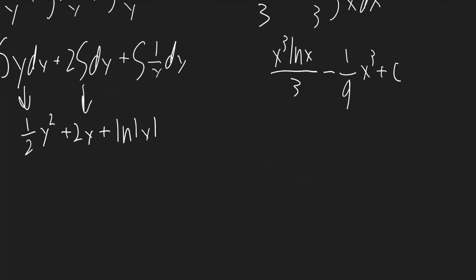Now I'll go ahead and include my right side into there. So this will be equal to x cubed ln x over 3 minus 1 ninth x cubed plus c. So that is your final answer.